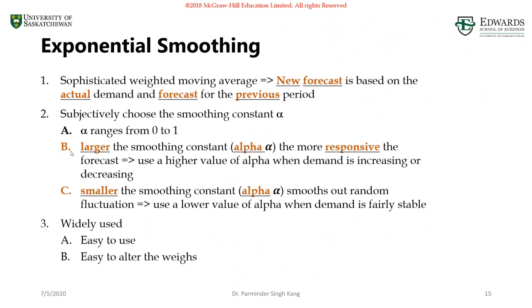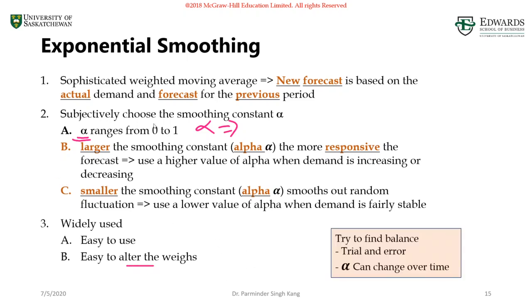It's widely used in industry and easy to use. One advantage over weighted moving average: I don't need to worry about a set of weights. We only have one weight — alpha. I only need to determine the value of alpha instead of determining two or three weights for weighted moving average, which makes altering weights easier. The rule of thumb is: if you want to closely mimic actual demand, use a higher value of alpha; if you want to smooth out the time series, use a lower value of alpha.